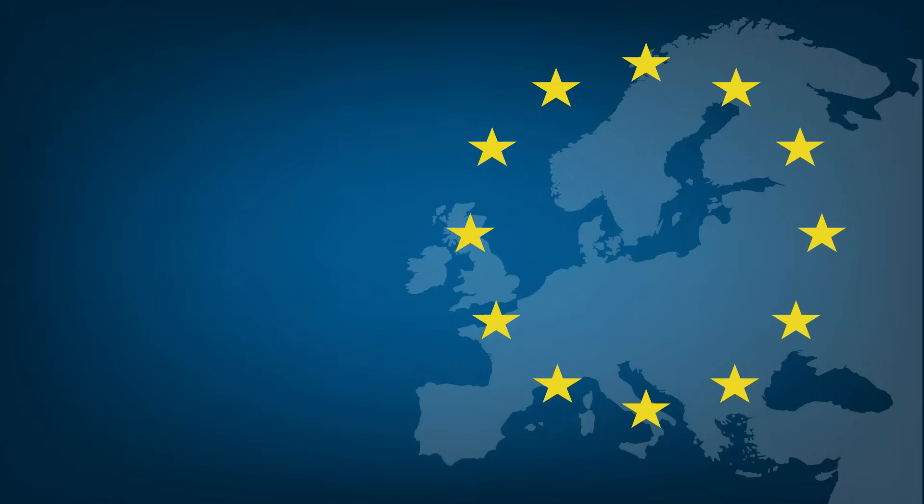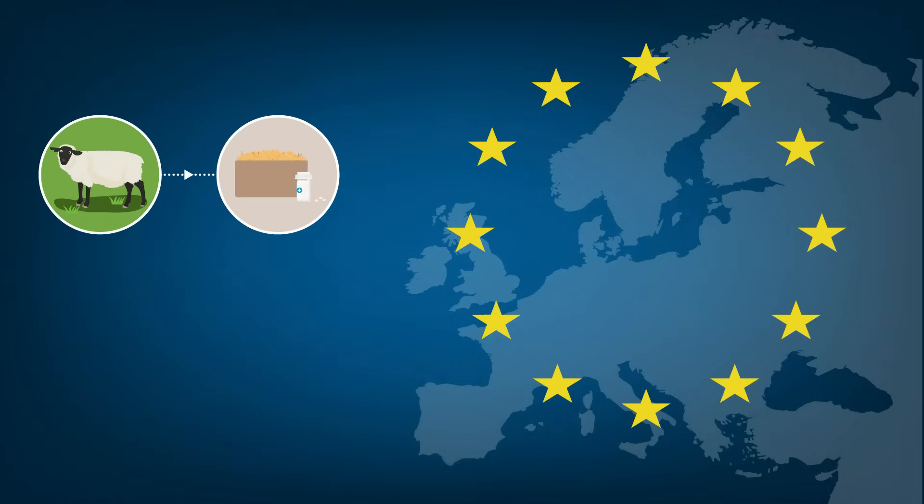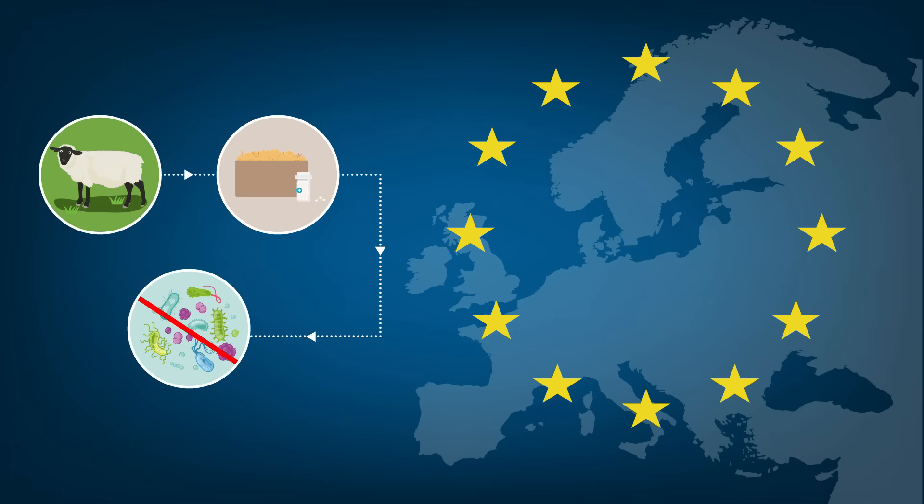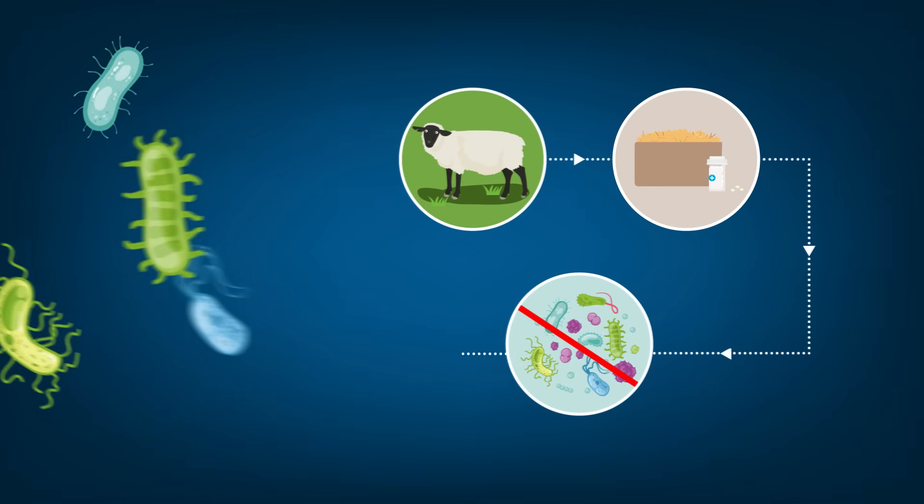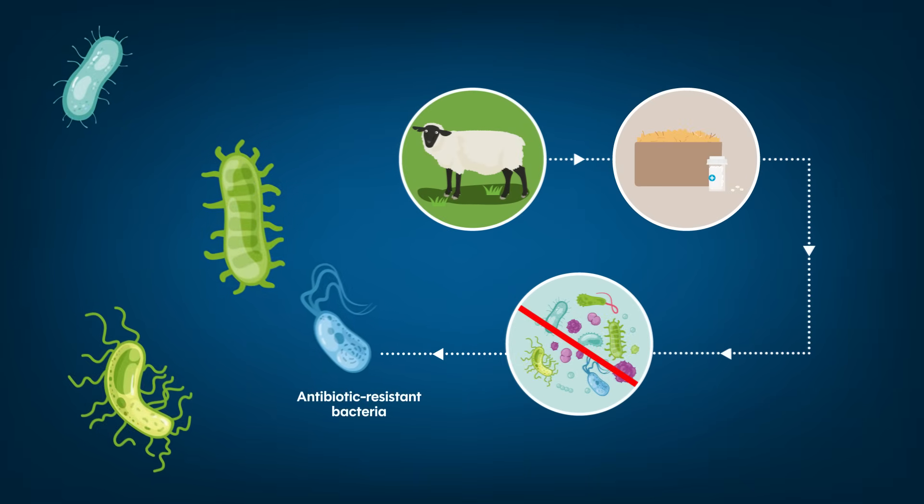For decades, livestock in the EU were routinely given medicated feed containing low doses of antibiotics, not to treat infections but to prevent them. This preventative daily dosing greatly contributed to the development of antibiotic resistant bacteria.